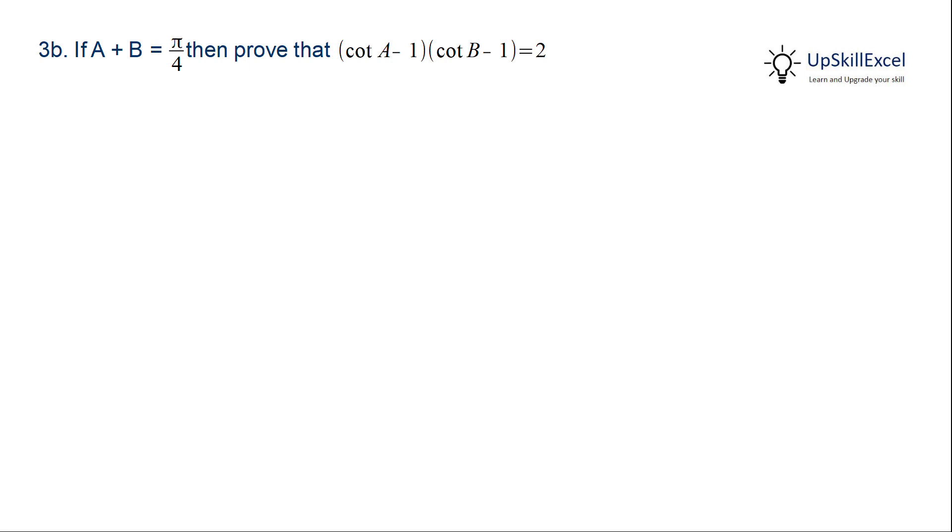If A + B is equal to π by 4, then prove that (cot A - 1) multiplied by (cot B - 1) is equal to 2.